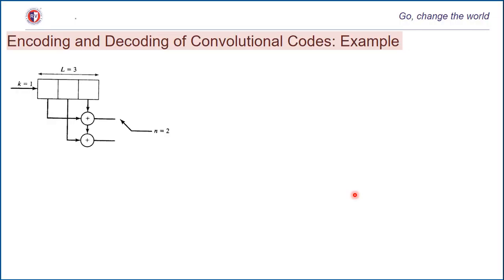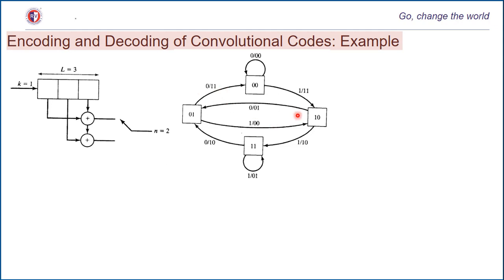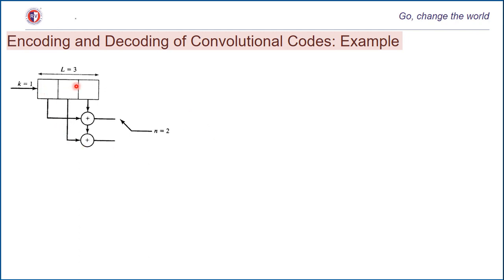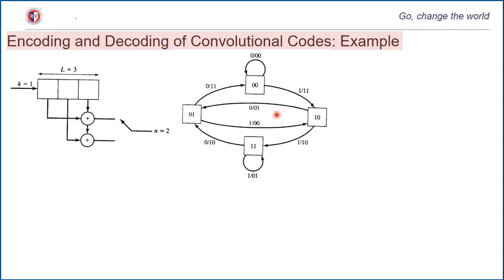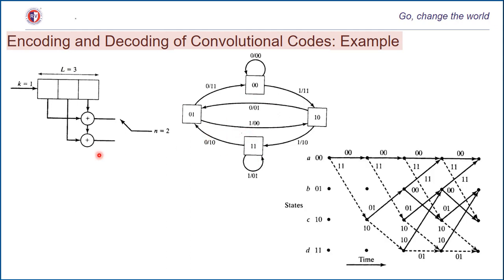Hello everyone, for another video entry on convolutional codes. In an earlier video, we saw an example of decoding using the Viterbi algorithm. In this video, we will pick a similar example. However, we will deal with an end-to-end case where for a given information bit sequence we will encode using a given convolutional encoder structure. This is a rate-1/2 encoder with constraint length 3, and we have drawn the state diagram as well as the trellis diagram for this convolutional encoder structure.